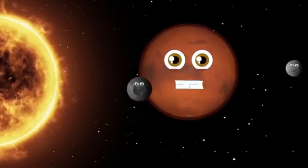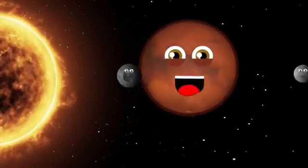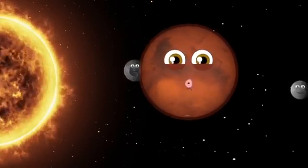Phobos is larger of the orbiting two. It circles me three times a day and that's true, but it takes 30 hours for Deimos to loop.